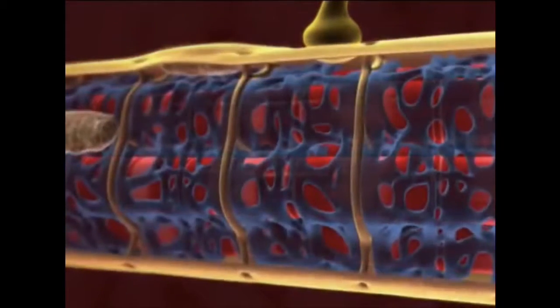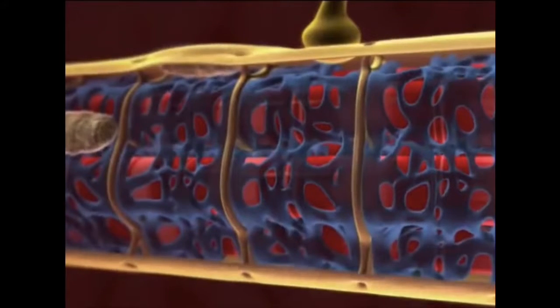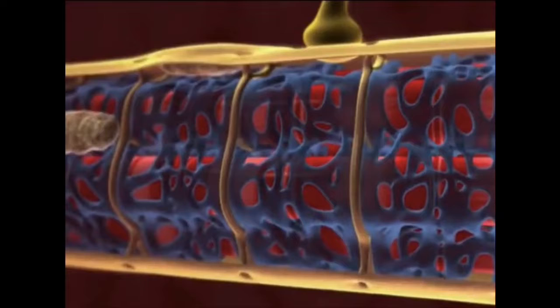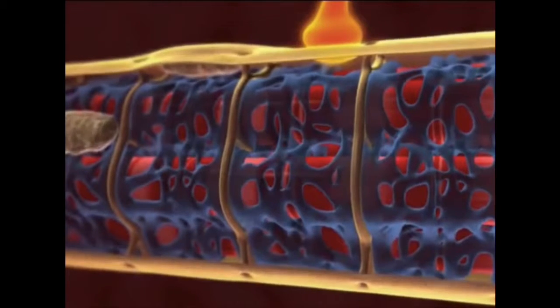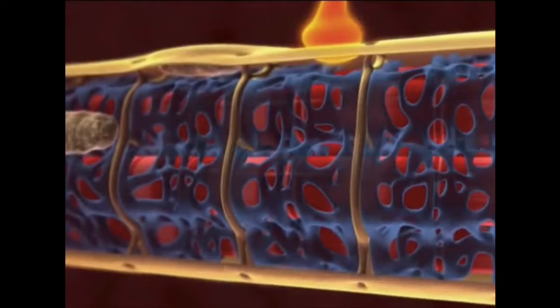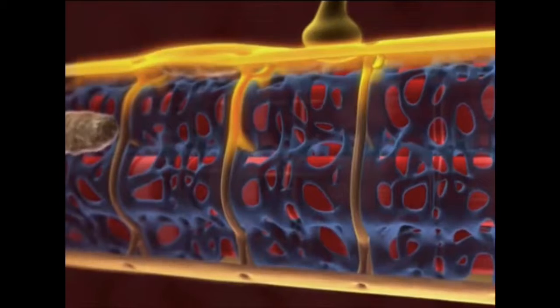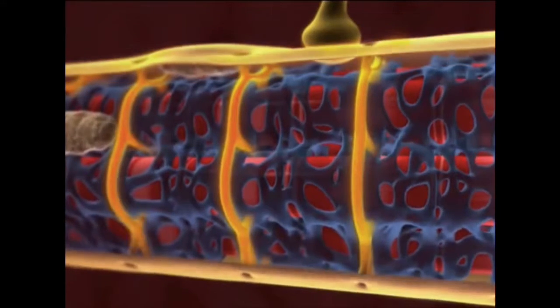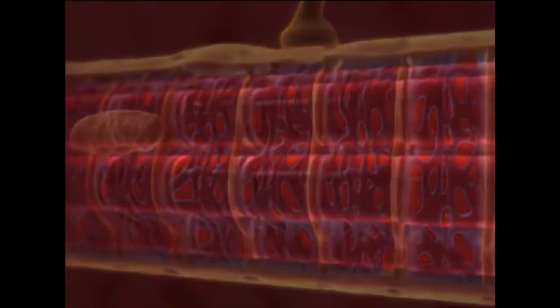Each muscle cell contains bundles of parallel myofibrils, shown in red, surrounded by endoplasmic reticulum, or ER. An action potential traveling down a motor neuron initiates an action potential in the muscle cell. The action potential spreads along the membrane and down tubules that extend into the cytoplasm, causing the myofibrils to contract.